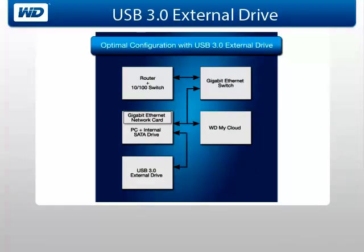Additionally, if you are using a USB 3.0 external drive, the optimal configuration is to connect the router with the 10/100 switch to the gigabit ethernet switch and connect both your personal computer and network drive to the gigabit ethernet switch. The USB 3.0 external drive should be connected to your personal computer.